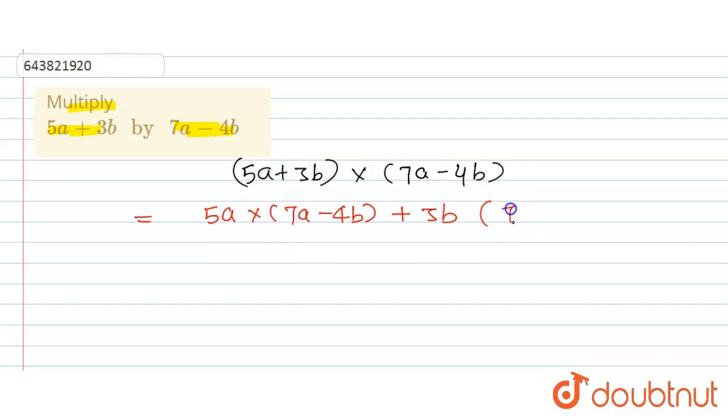Now we will multiply: 5a multiply with 7a, and minus as it is, 5a multiply with 4b, so 5a into 4b. And here 3b multiply also with each term, so 3b into 7a, and minus as it is, 3b into 4b.